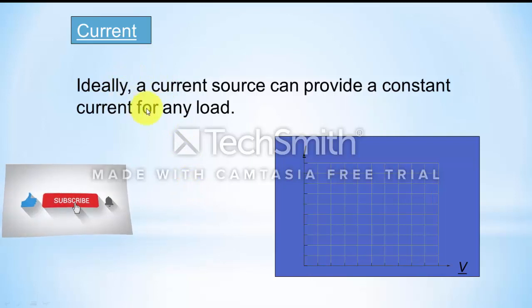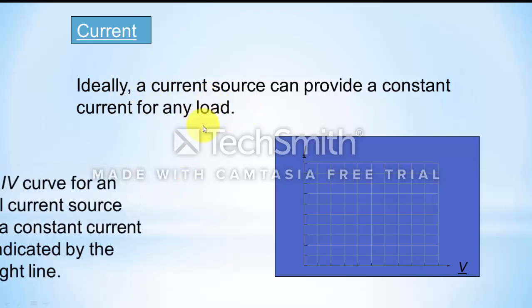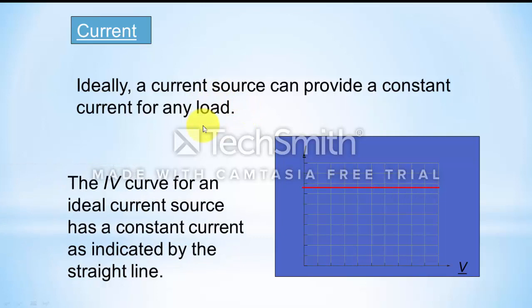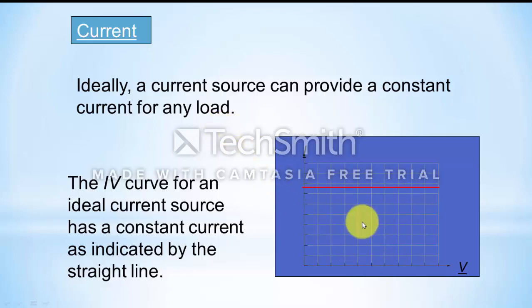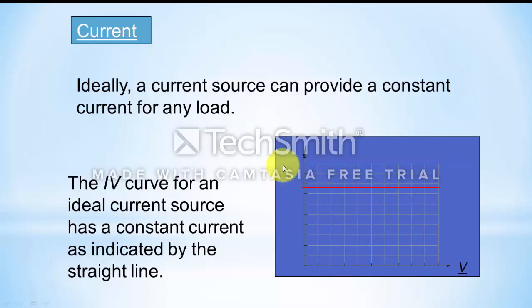If we change the load, the current should remain constant throughout. If we change the external resistance or load, then the potential difference will change across the two terminals of the load, but current must be constant. In the V-I curve, it is a straight line parallel to the potential axis.